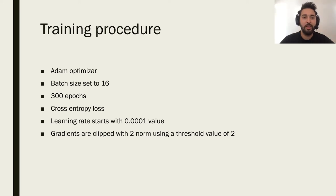The training phase was configured as follows. The chosen optimization was Adam. The batch size was set to 16 and the number of epochs is 300. The chosen cost function is the cross entropy. The learning rate starts at 0.0001 and the gradients undergo a 2-norm normalization with a threshold of 2.